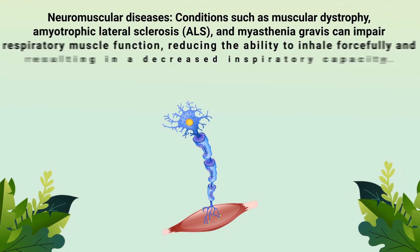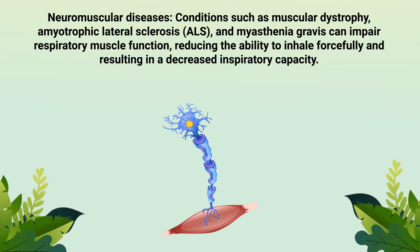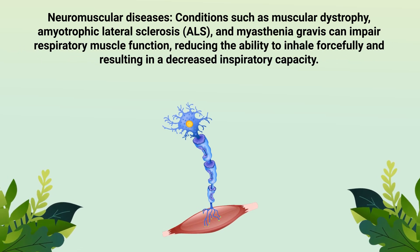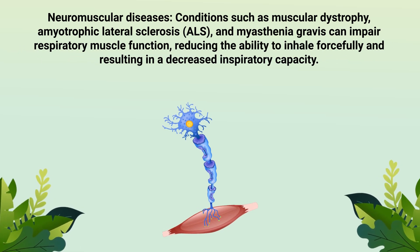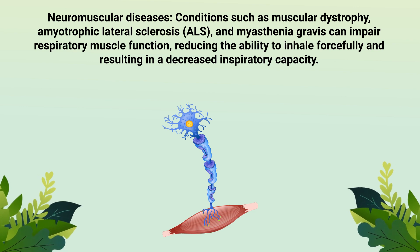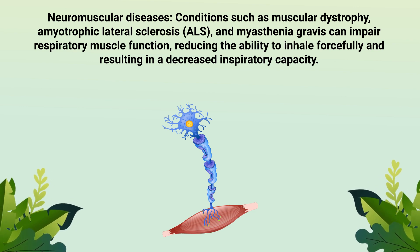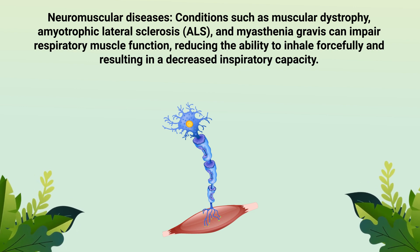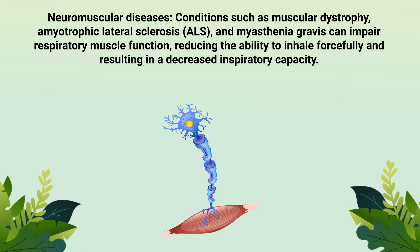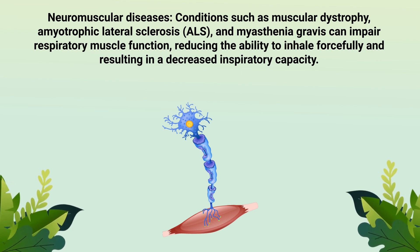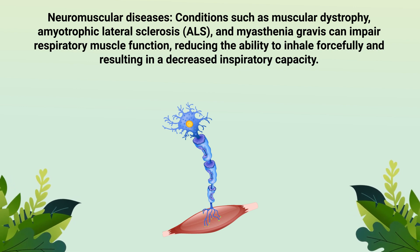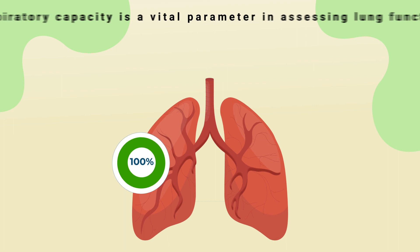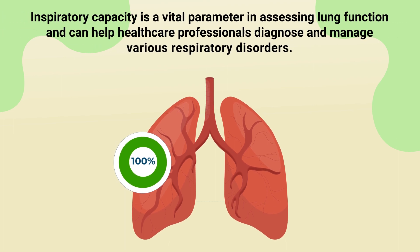Neuromuscular diseases such as muscular dystrophy, ALS, and myasthenia gravis can impair respiratory muscle function, reducing the ability to inhale forcefully and resulting in a decreased inspiratory capacity.